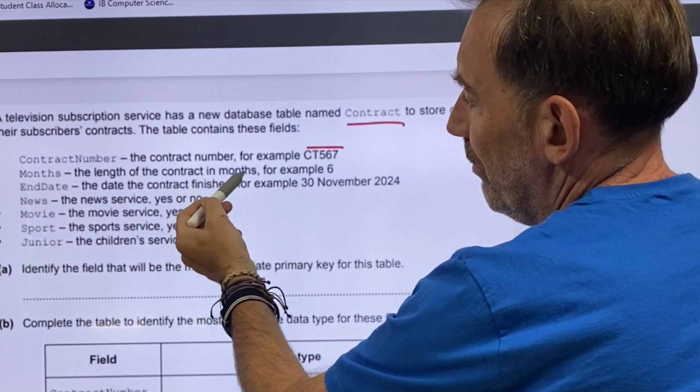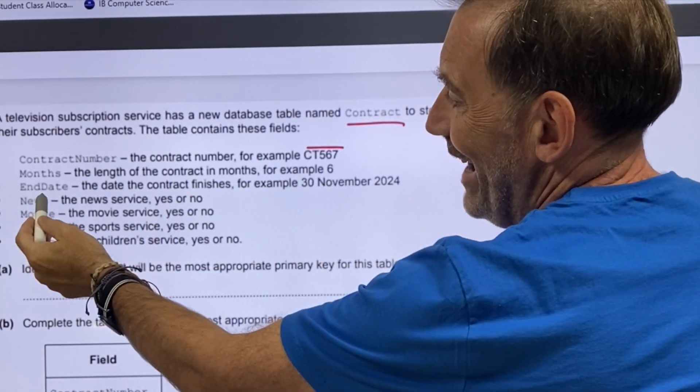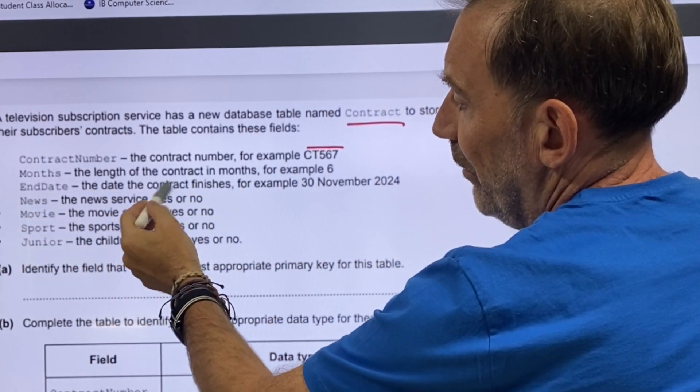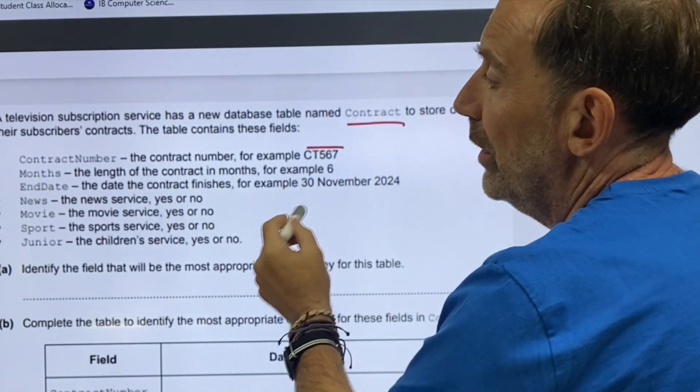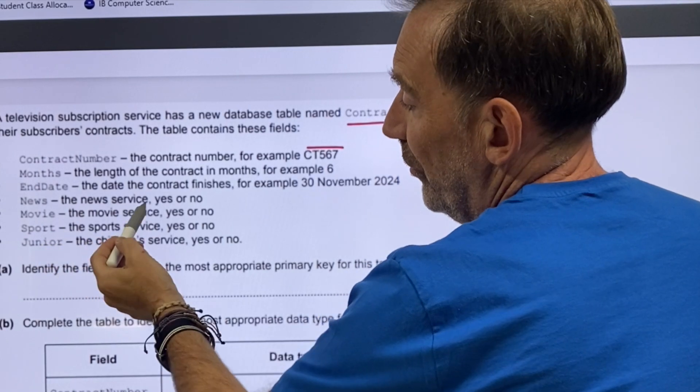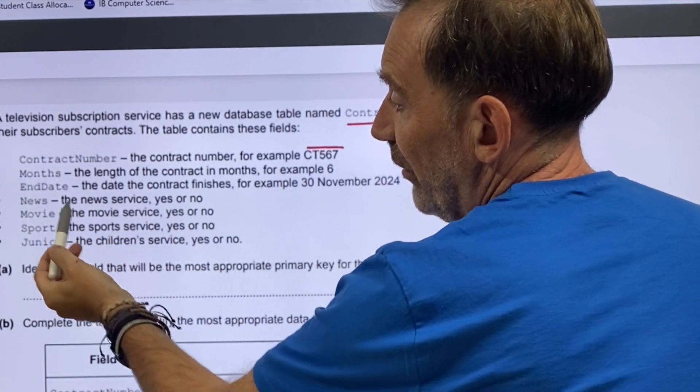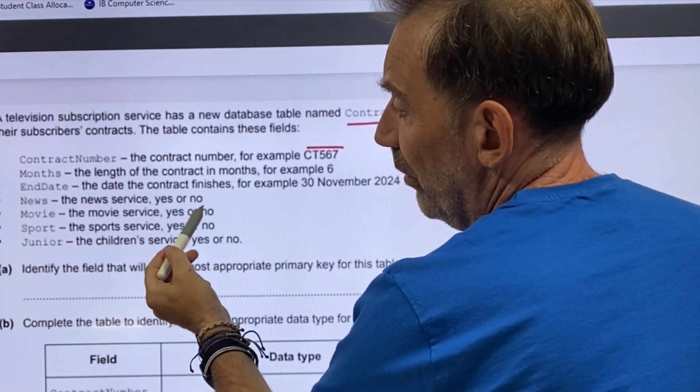Months, the length of the contract in months, for example, six months. End date, the date the contract finishes, for example, 30th of November 2024. News, the news service, whether that's yes or no. In fact, all of these look at yes or no, so these are all Boolean.